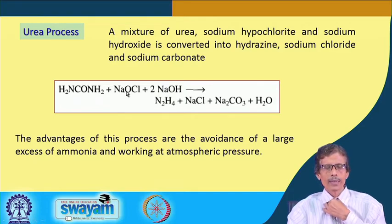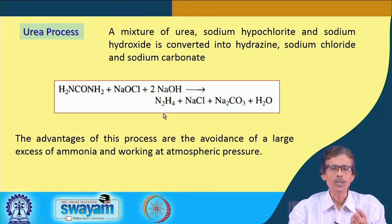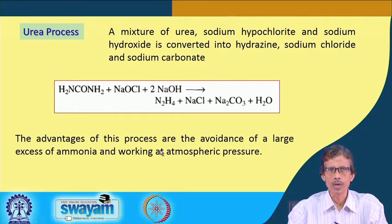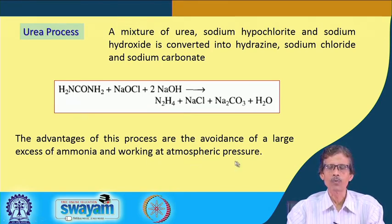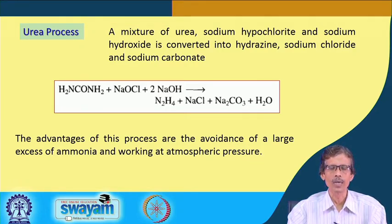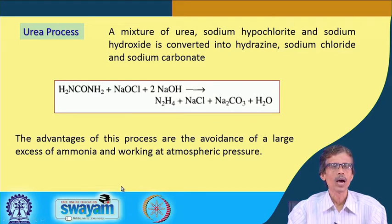Sodium hypochlorite solution in a strongly alkaline medium can be utilized for the production of hydrazine by this different route. The advantage of this urea process compared to the ammonia-based process is the avoidance of a large excess of ammonia — handling and using ammonia is sometimes very difficult — and the reaction goes at atmospheric pressure. There is no need for higher pressure, making it more cost-effective at industrial scale. Thus, ammonia or urea can both be used as starting material.